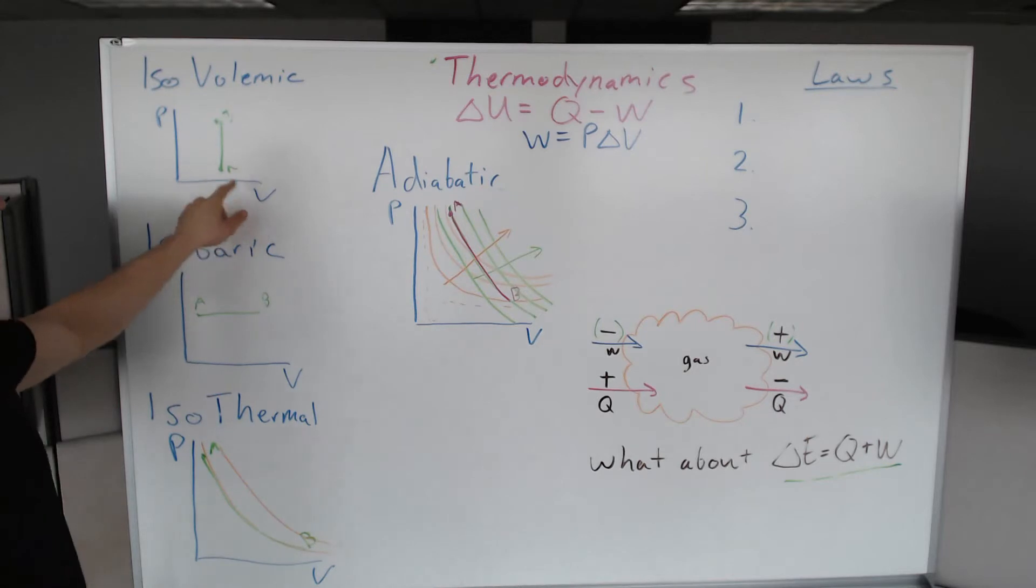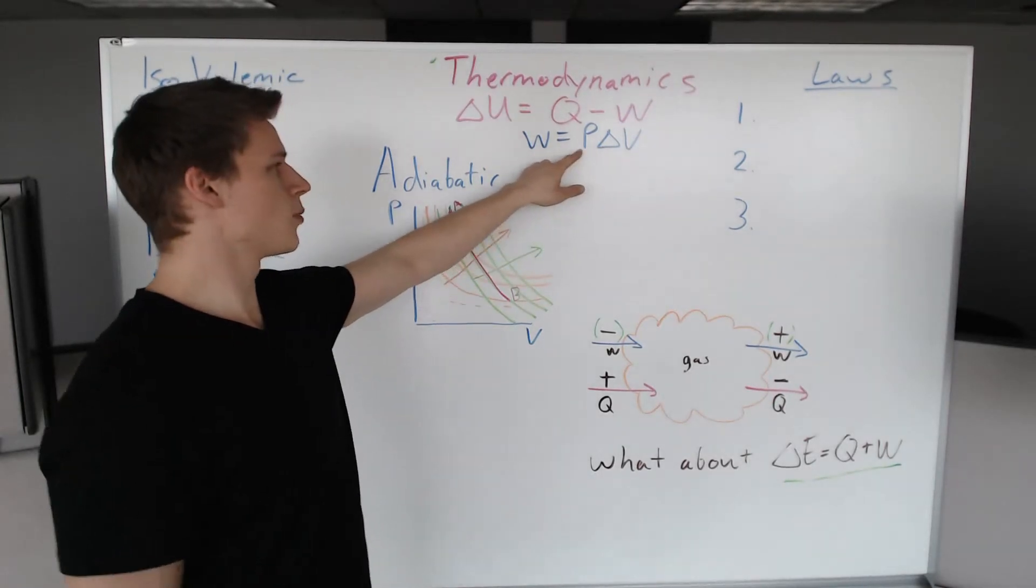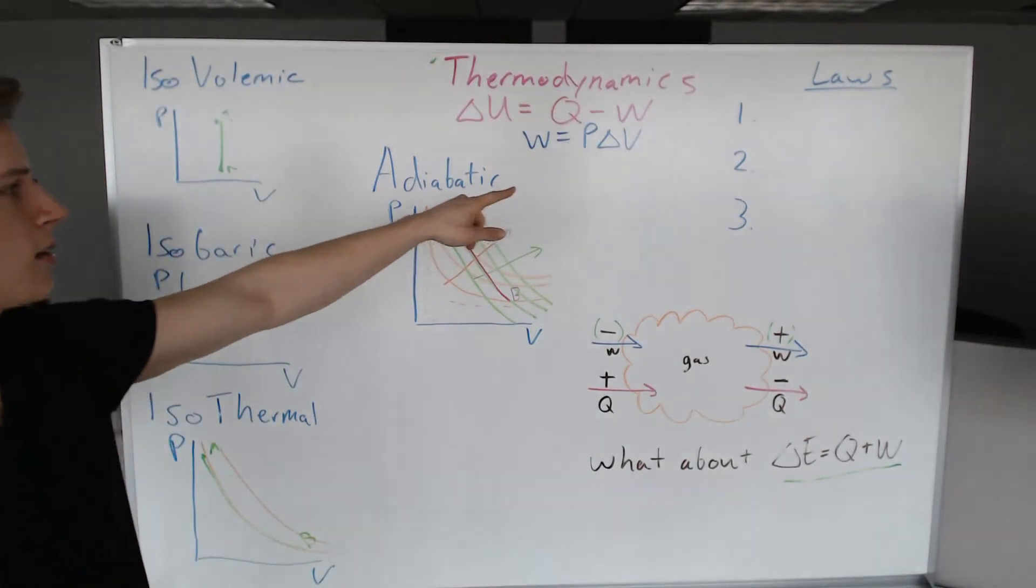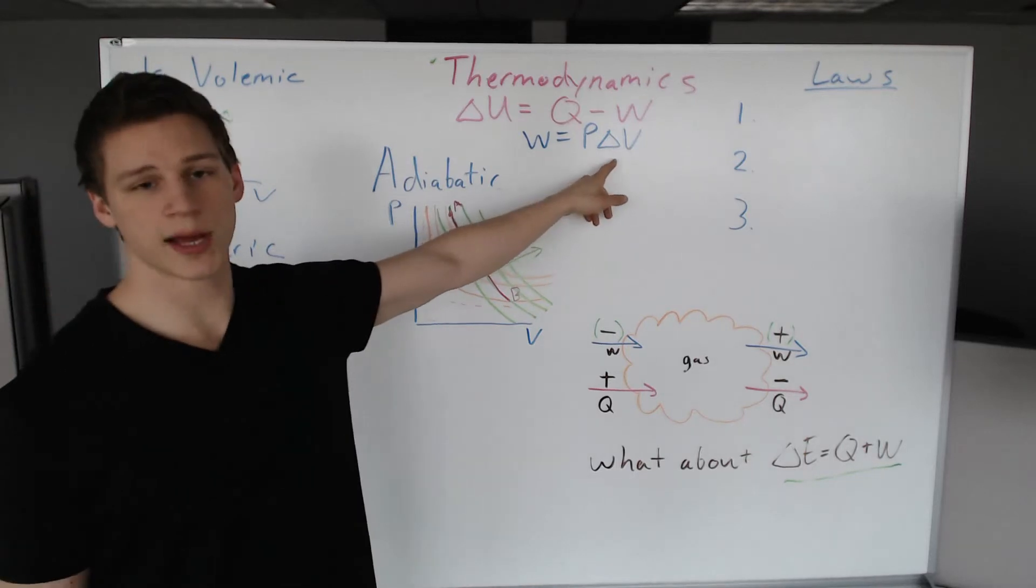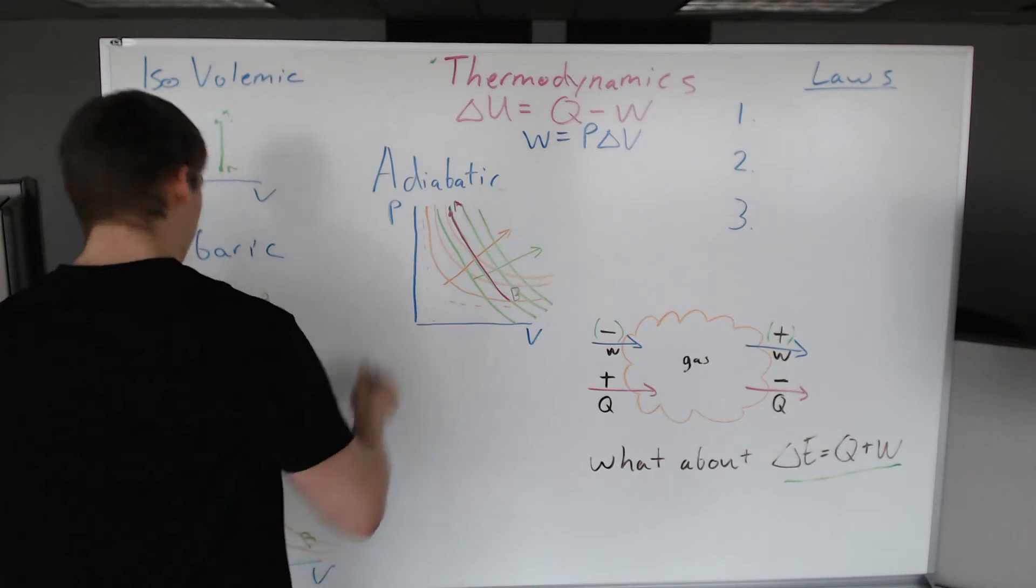For isovolumetric, do we have any work? That is the question. Because the volume does not change, although pressure does, pressure is not going to affect the amount of work. Pressure changing and volume not changing means that our work is zero.